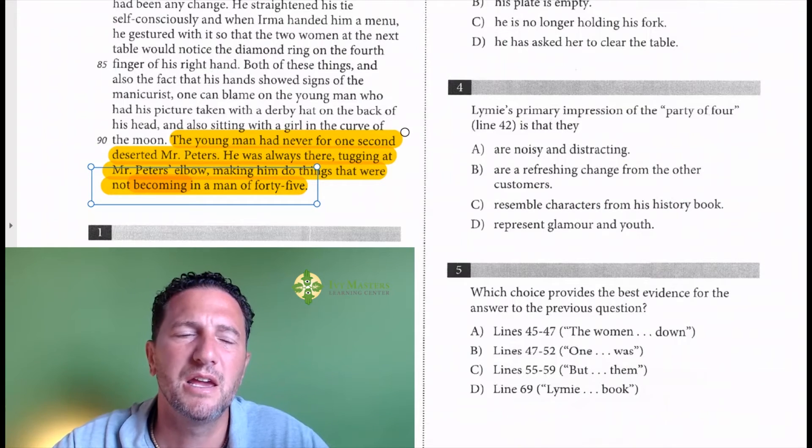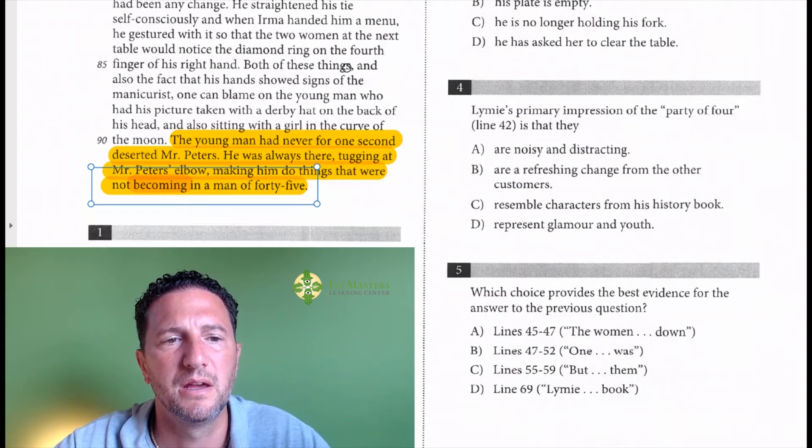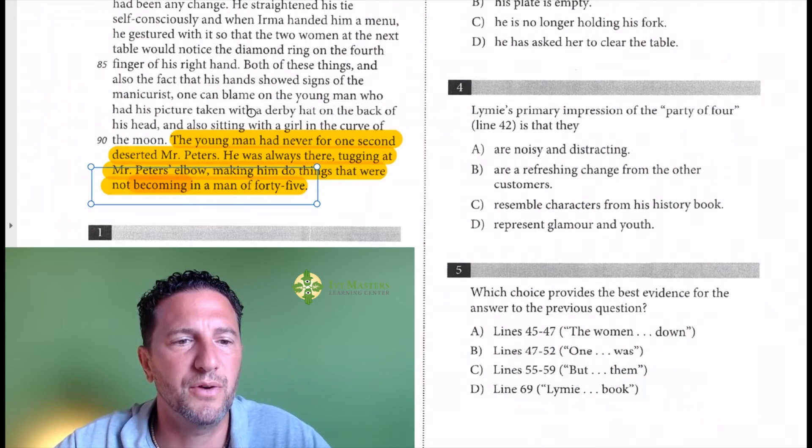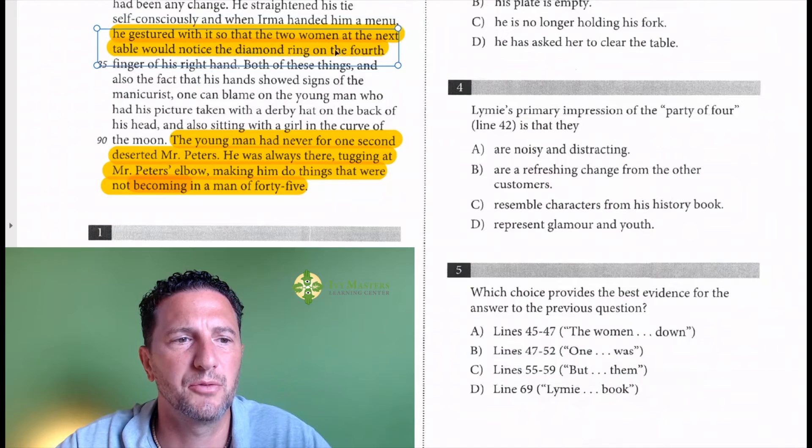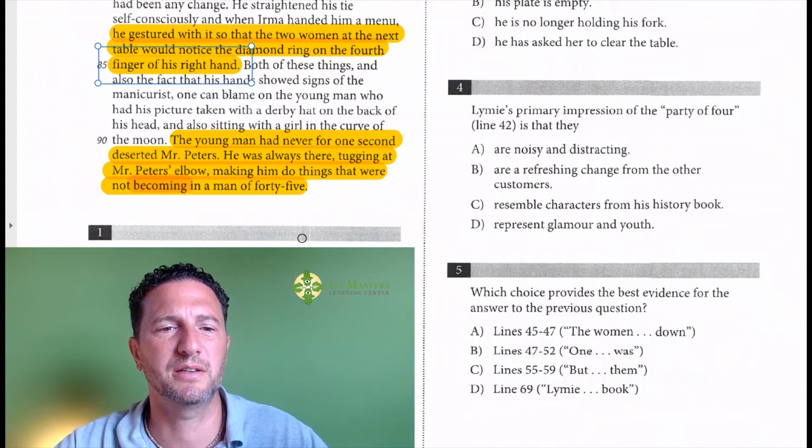If not, there's another little bit of a hint. Before, he's 45 years old and he straightens his tie self-consciously when Irma handed him the menu. He gestured with it so the two women at the next table would notice the diamond ring on the fourth finger of his right hand. And then it gets a little abstract, but basically...